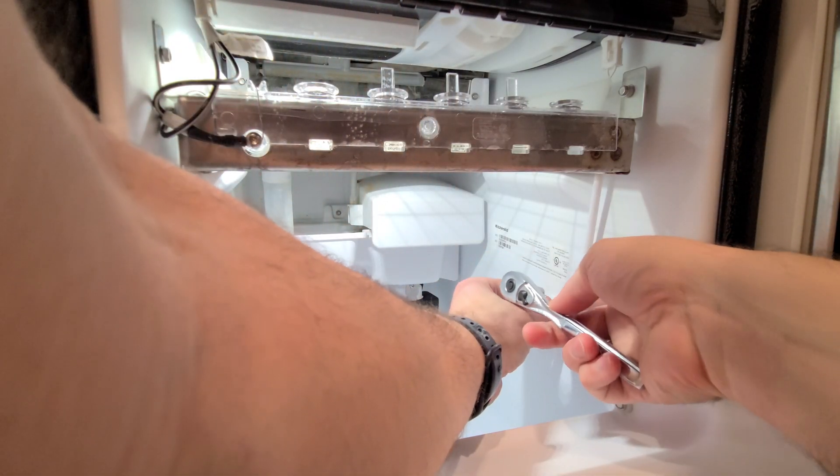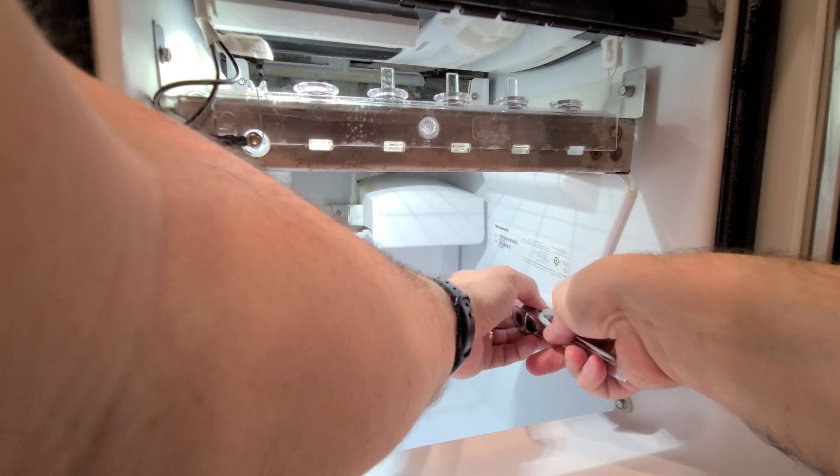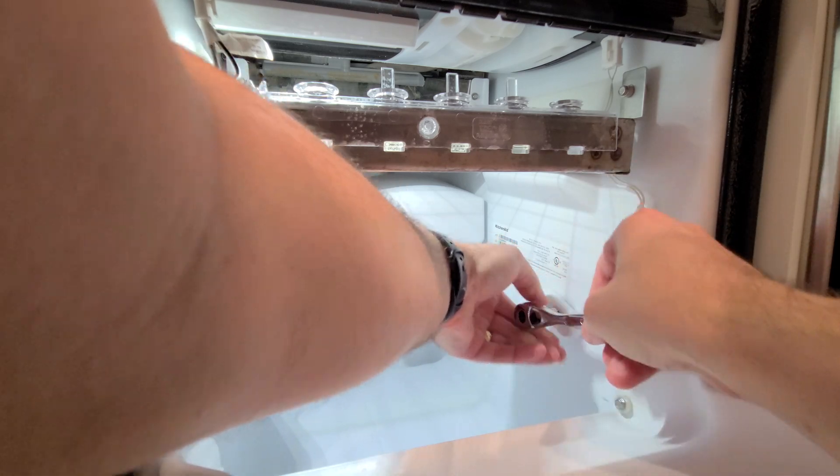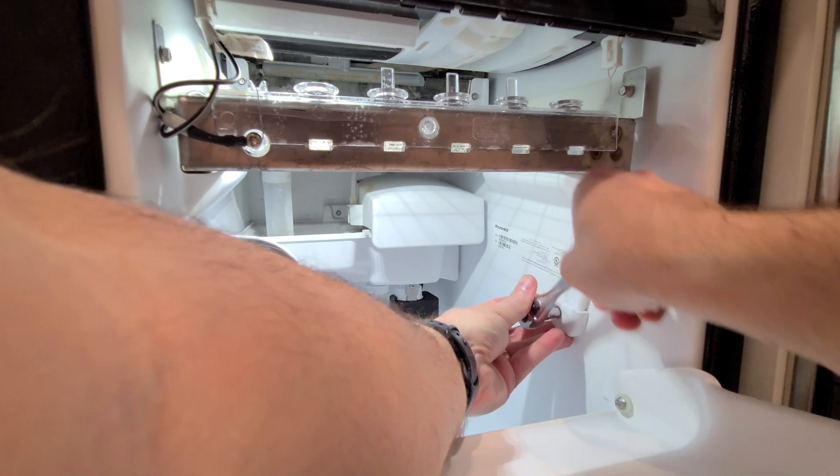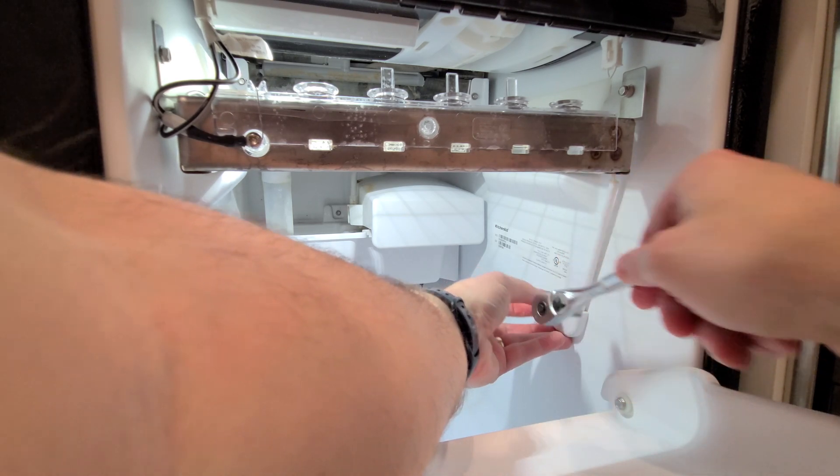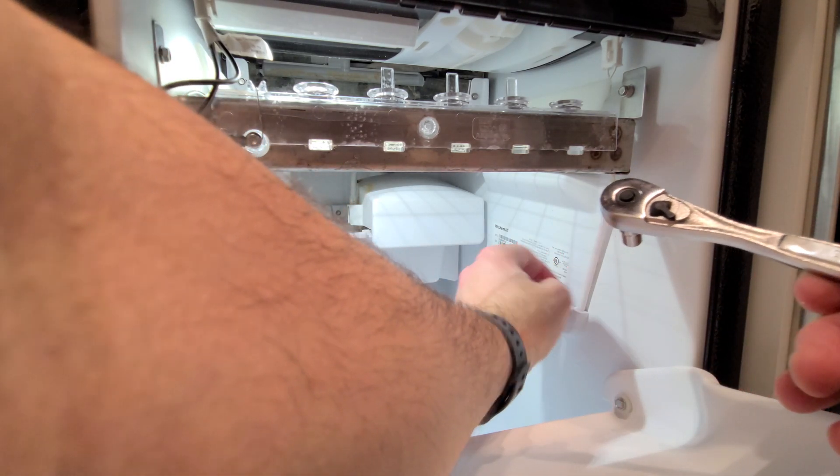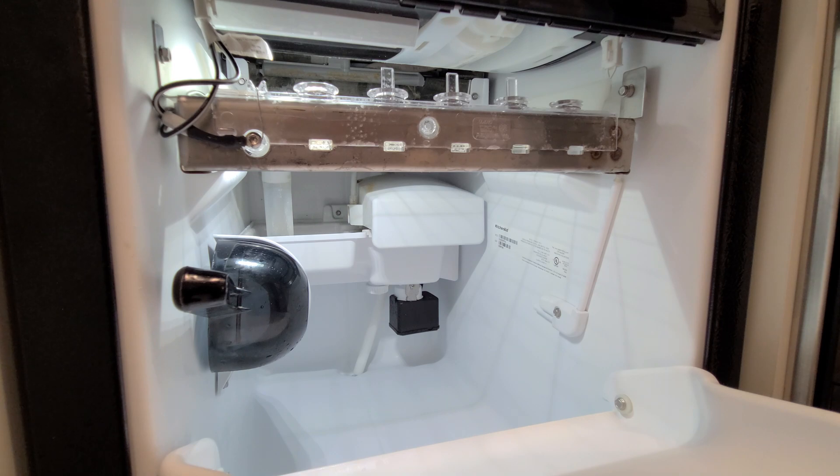And now all we have left is, on this thermistor, is to just tighten this screw back up. You don't need to over tighten that. And so we're good. You just want to make sure that the wiring is not close to the heating coils that slice the ice. And that looks great.